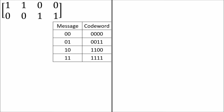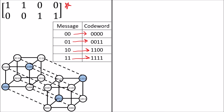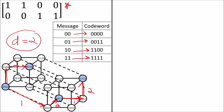Let's take a look at another code created by this generator matrix. You can check that this matrix sends these two-bit messages to these four-bit code words. Geometrically in four dimensions the code looks like this. If you look carefully at this image you'll see that the smallest distance between any pair of valid code words is always two — we can't find any valid code words that are right next to each other with a distance of one. So the minimum distance in this case is two.